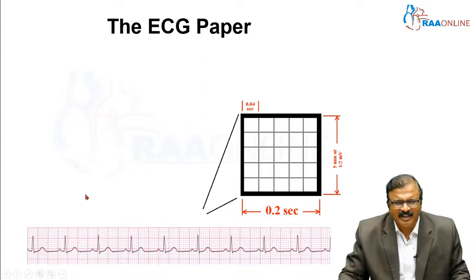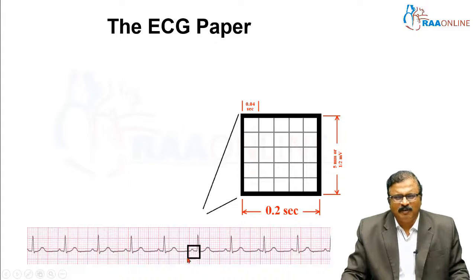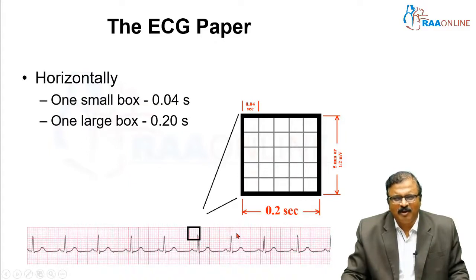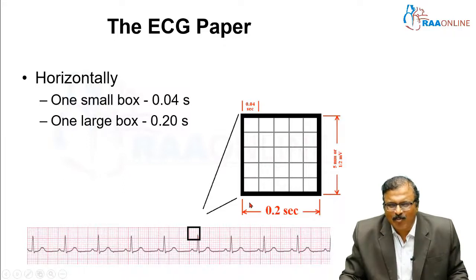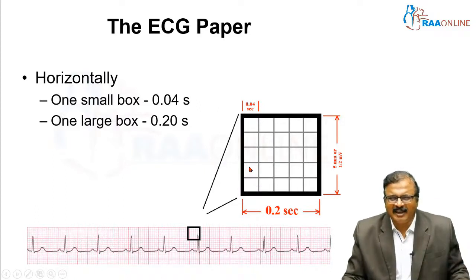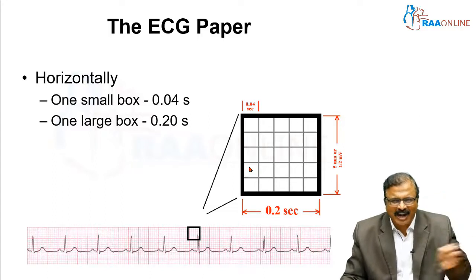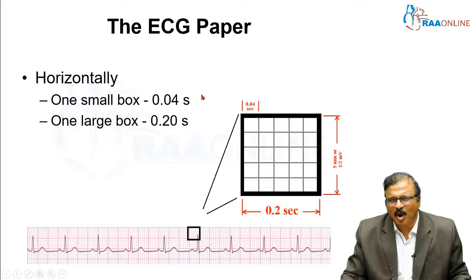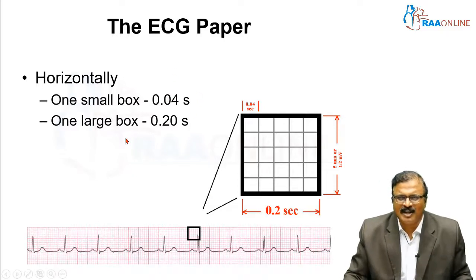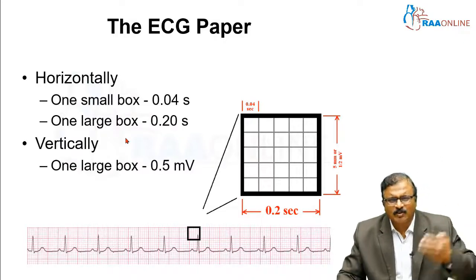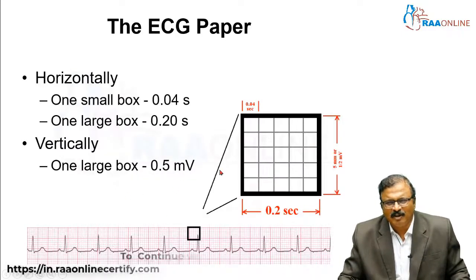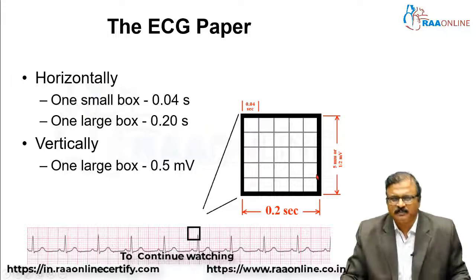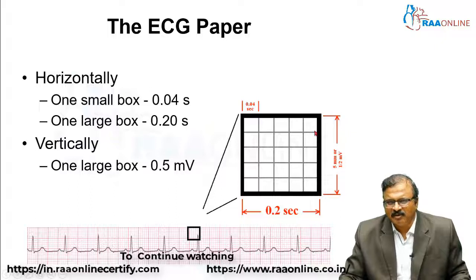The ECG paper speed is 25 millimeters per second. Five big boxes make up one second. Each big box is therefore 0.2 seconds. Inside each big box there are small boxes — each small box is 0.04 seconds (0.2 divided by 5). These are the basics we need to know in order to calculate the duration of each wave. Regarding voltage — the vertical axis: one large box is 0.5 millivolts, and one small box is 0.1 millivolts.